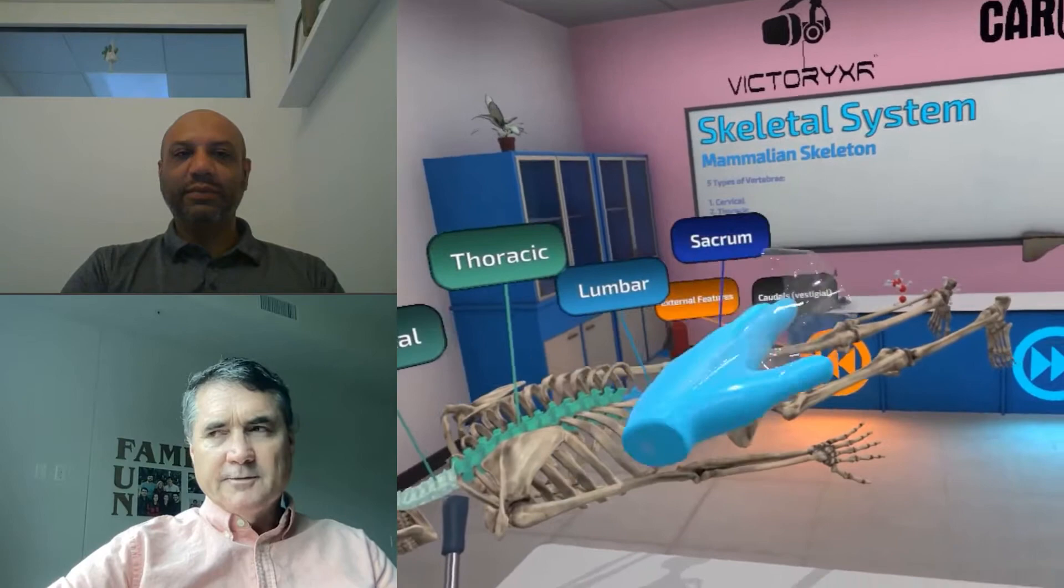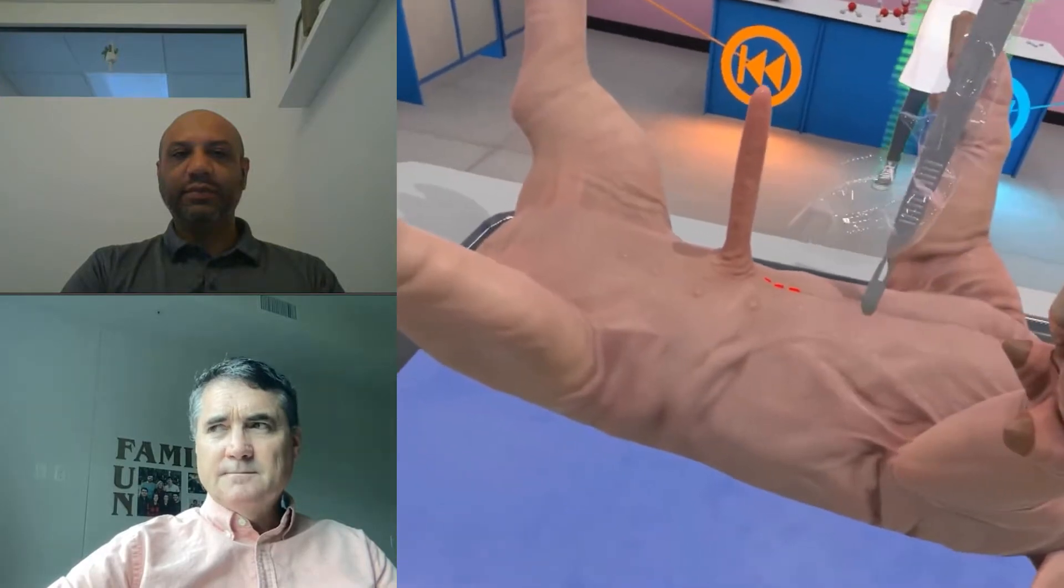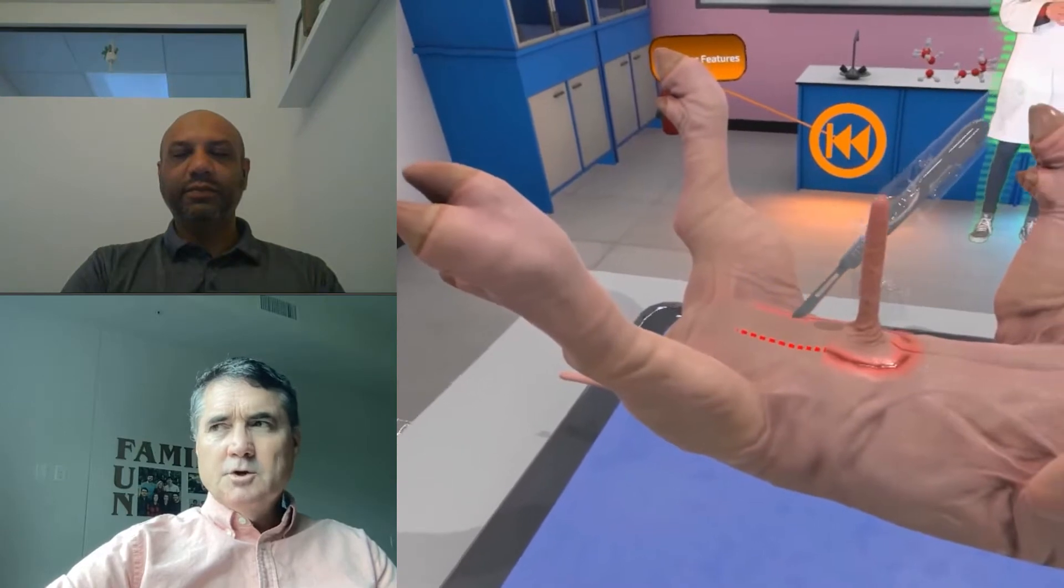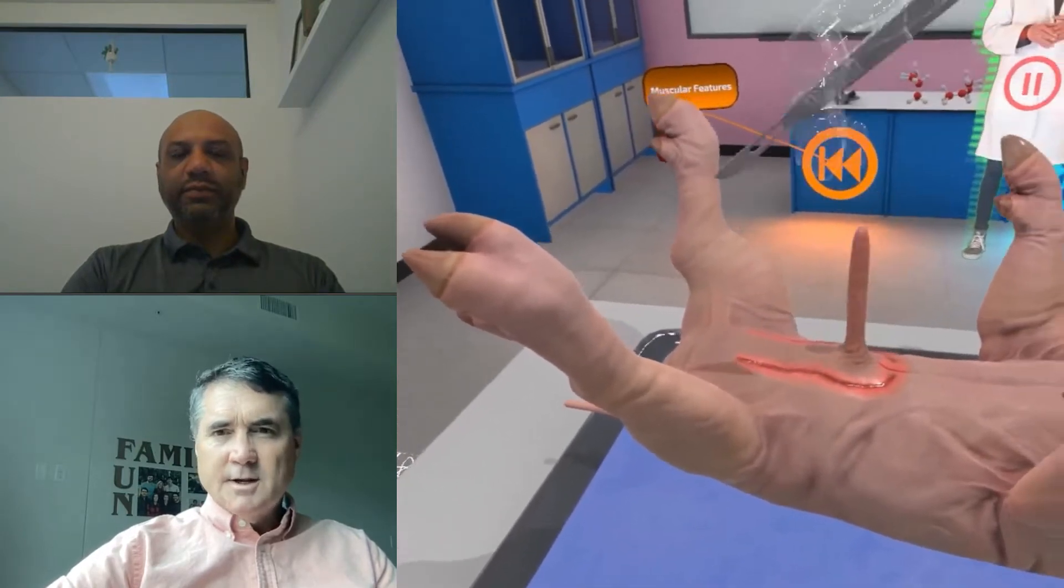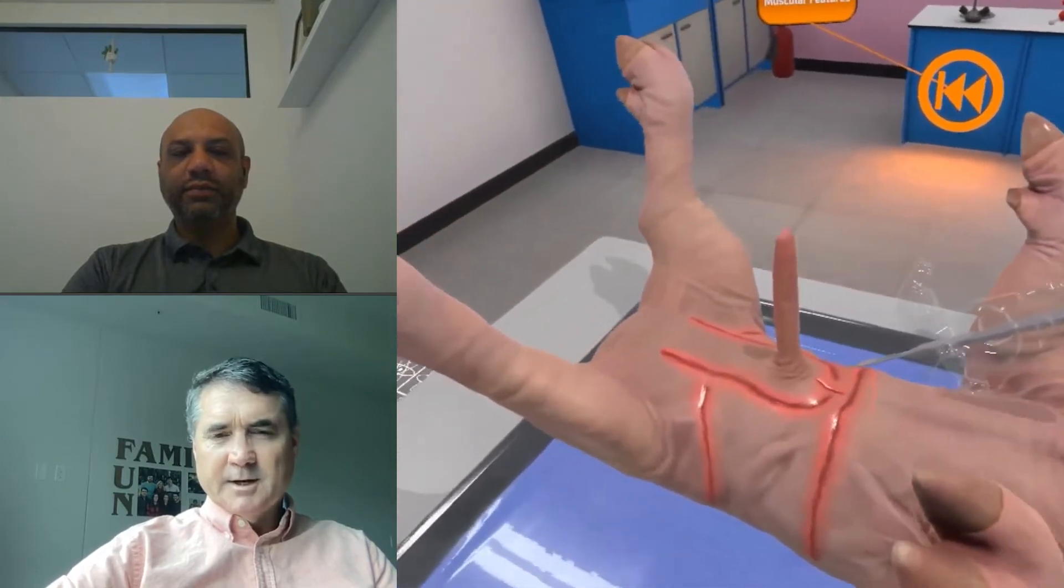You're going to find in the market that there are some less expensive headsets that are three degrees of freedom, and that's good. They definitely serve their purpose. But if you want to do animal dissection, you can't do that with three degrees of freedom because you don't have the ability to pick up the tools and manipulate the organs in a way that's realistic.